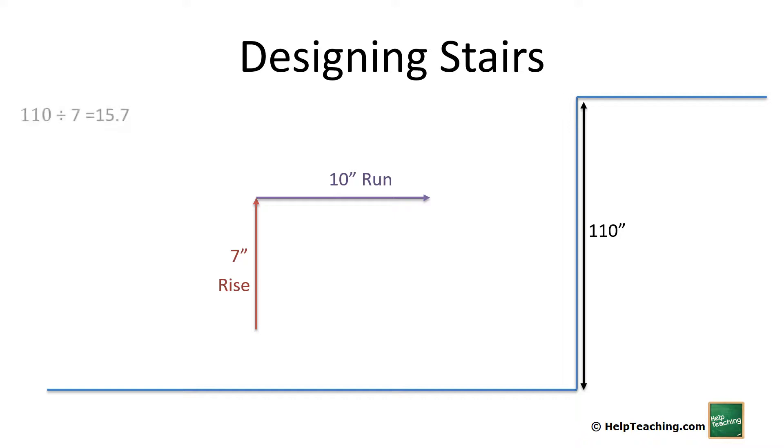So if we take 110 inches and we divide it into 7 inch increments, it comes to 15.7, which of course doesn't quite work. We have to have an even number of steps. So let's round that to 16 and imagine this is divided to 16 equal increments. 110 divided by 16 brings us to 6.875 inches.